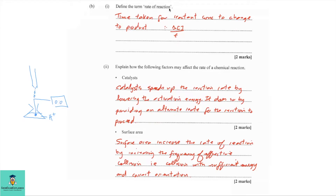Part b1 — define the term rate of reaction. Rate of reaction can be defined as the change in reactant concentration over time, i.e., the time taken for reactant concentration to change to product. Part two — explain how the following factors affect rate of reaction. A catalyst speeds up the reaction rate by lowering the activation energy, providing an alternate route for the reaction to proceed. Surface area increases the rate of reaction by increasing the frequency of effective collisions — that is, collisions with sufficient energy and correct orientation.